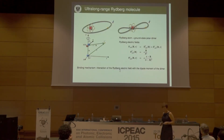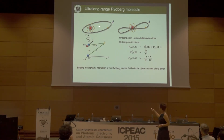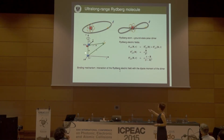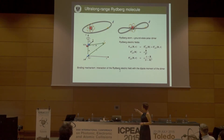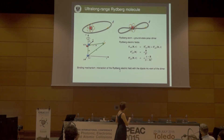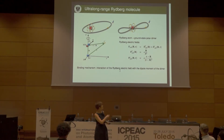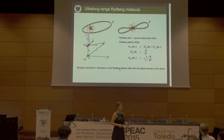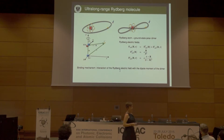So, what does my system look like? I have here this Rydberg atom with my diatomic molecule. I fix the Rydberg core in the laboratory fixed frame and put the diatomic molecule along the z-axis of the laboratory fixed frame. The electron orbits in any position in space. The Rydberg electric field has two different terms: the first is the electric field due to the Rydberg core, and the second is the electric field due to the Rydberg electron.